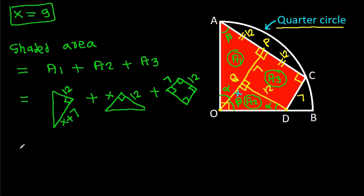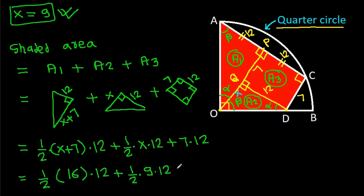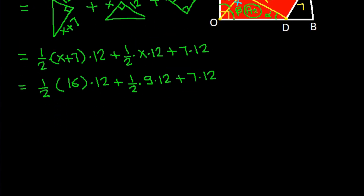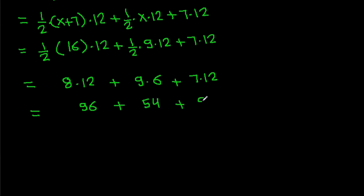So the shaded area = (1/2)(X + 7)(12) + (1/2)(X)(12) + 7 × 12 = (1/2)(16)(12) + (1/2)(9)(12) + 7 × 12 = 96 + 54 + 84 = 234.